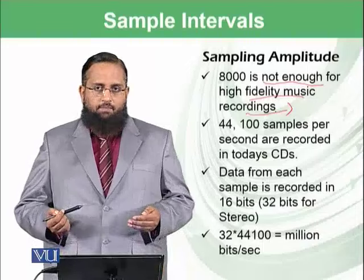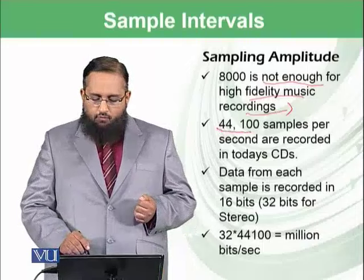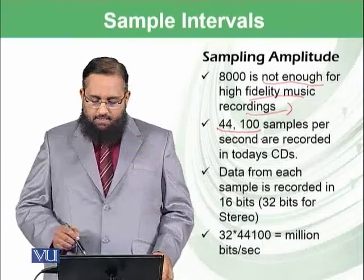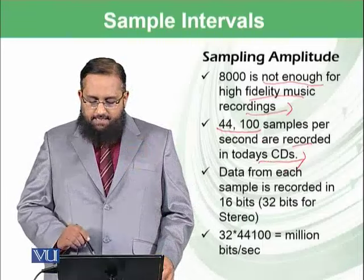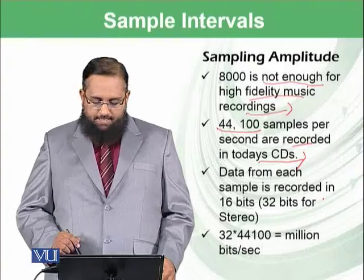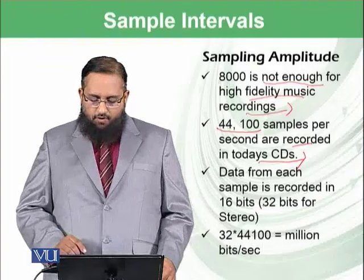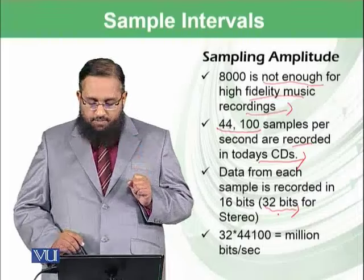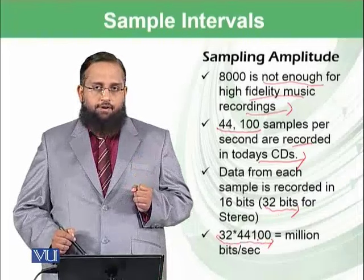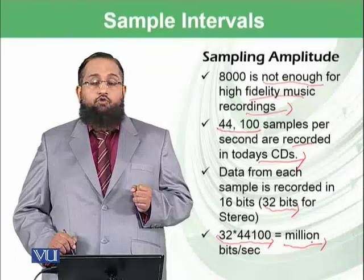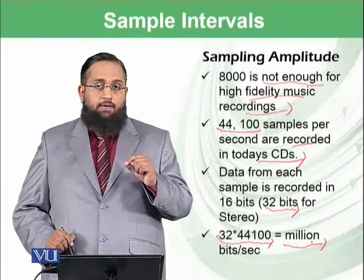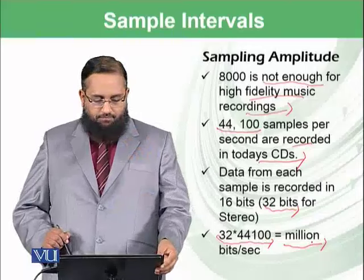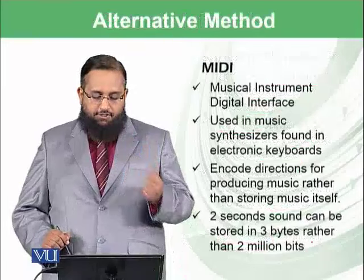For high fidelity music recordings, 44,100 samples of sound amplitude are taken per second. Data from each sample is recorded in 16 bits, and in stereo recordings, 32 bits. This means each sample needs 32 bits, so 32 multiplied by 44,100 gives approximately 1 million bits per second needed to store a high fidelity music recording — what we normally call high definition.